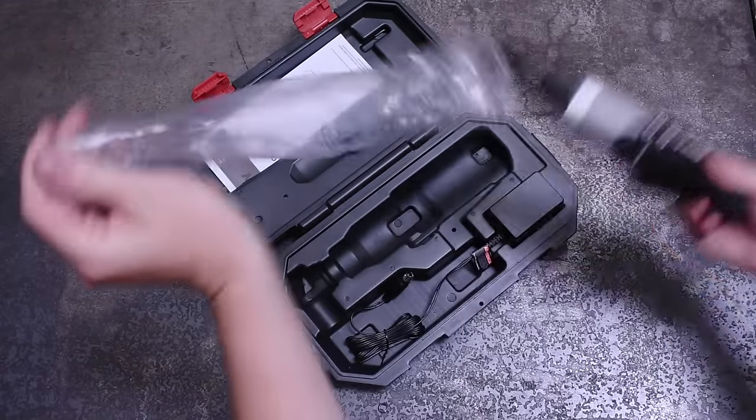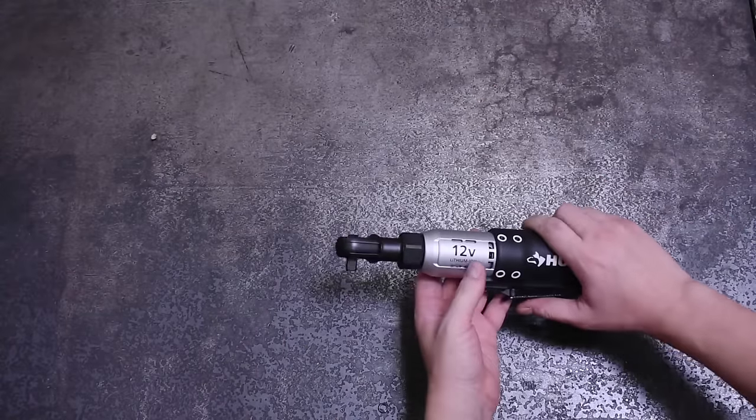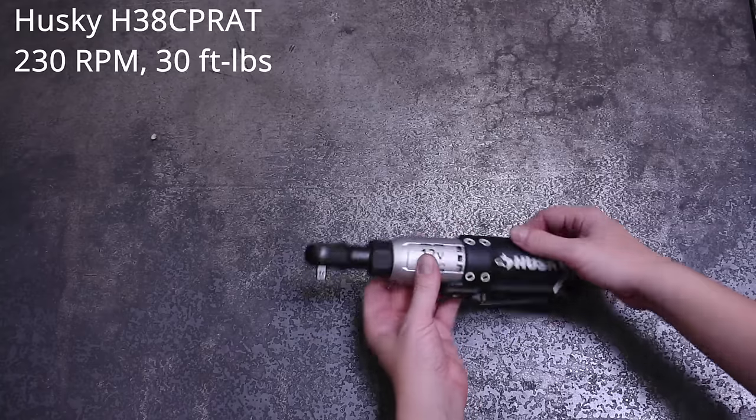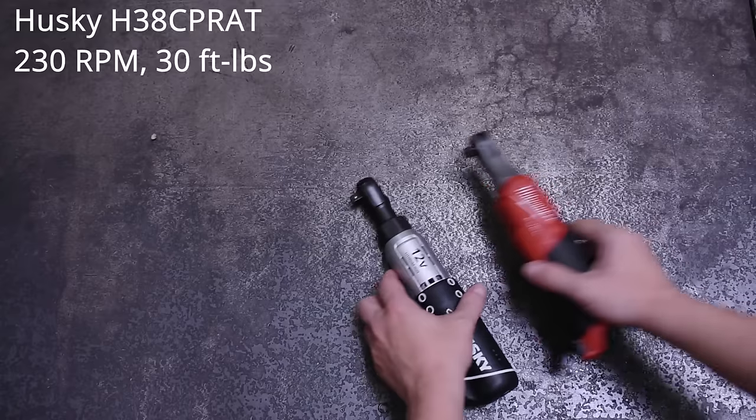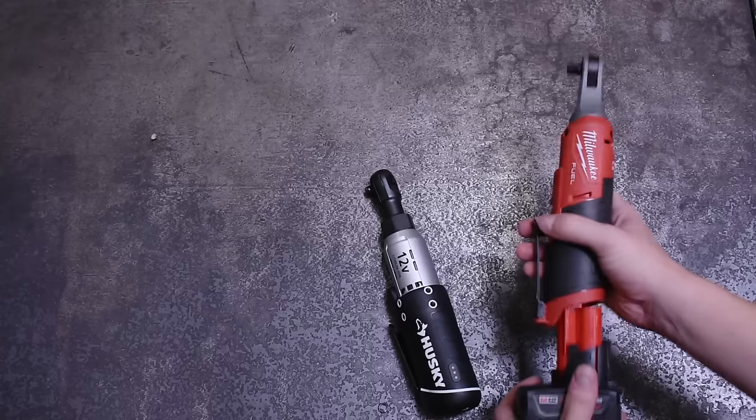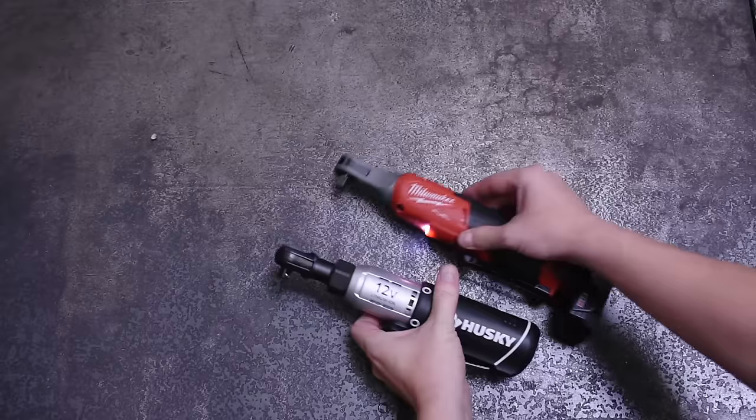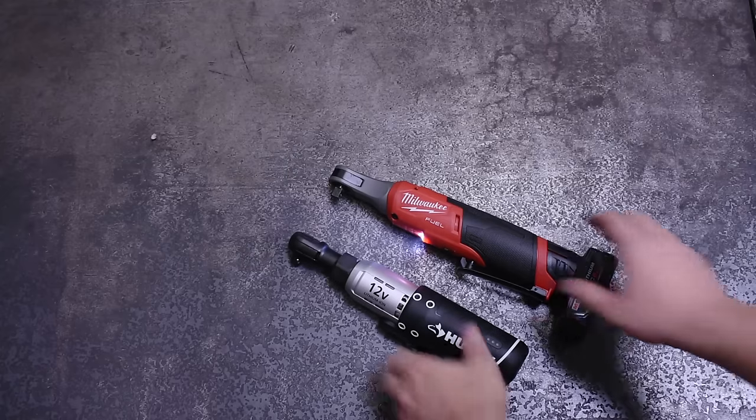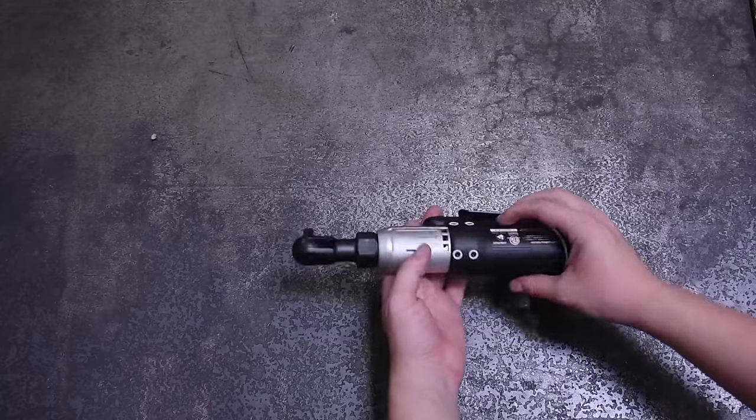In order of RPM, the first one is the Husky 12 volt cordless. We've had a lot of requests to do this one. That price is $96 and that's with a battery. This is a pretty stout little thing, definitely dense feeling, but comes in lighter than most at 2.2 pounds. It's rated for 30 foot pounds and 230 RPM. This one's trigger is a bit delayed in the action and let off, which could be awkward feeling at times.